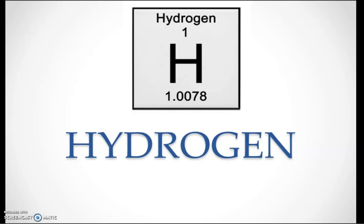What do you know about hydrogen? In the periodic table, hydrogen is the first element. It has atomic number one, which means it has only one proton, one electron, and one neutron.